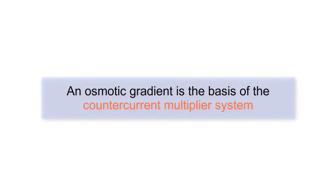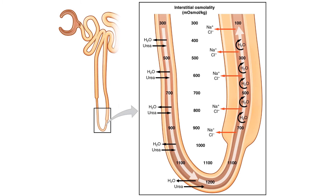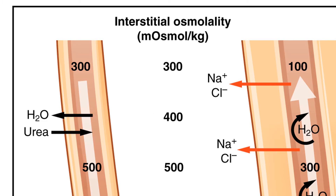Number 2. An osmotic gradient is the basis of the countercurrent multiplier system. For more information on osmosis and an explanation of an osmotic gradient and osmolarity, see our video on this channel covering osmosis. The filtrate in the proximal convoluted tubule has an osmolarity of about 300 milliosmoles. The interstitial fluid on the other side of the wall of the proximal convoluted tubule also has an osmolarity of about 300 milliosmoles. This means there is no net gain in water reabsorption from the filtrate into the interstitial fluid, as there is no osmotic gradient.